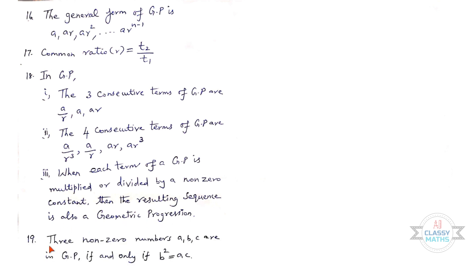Nineteenth one: Three non-zero numbers a, b, c are in GP if and only if b² = ac.